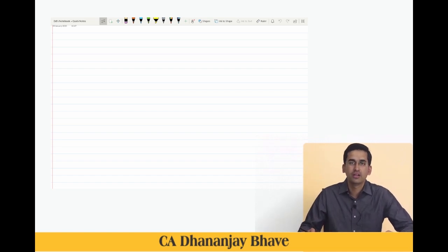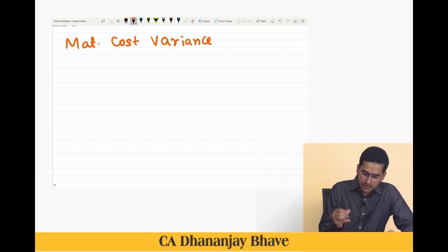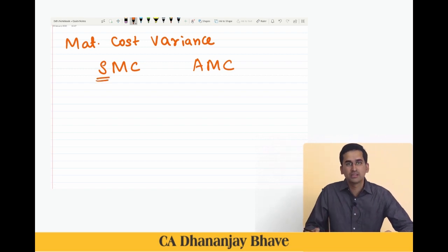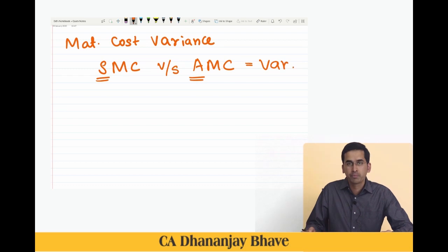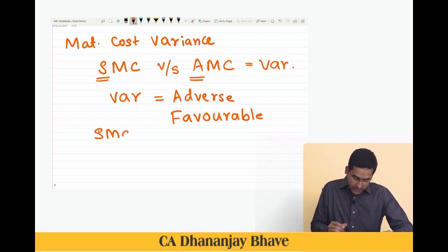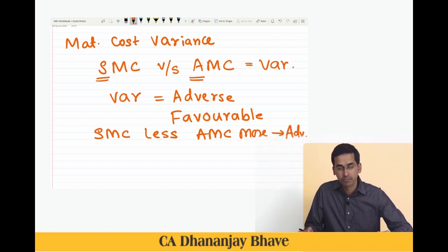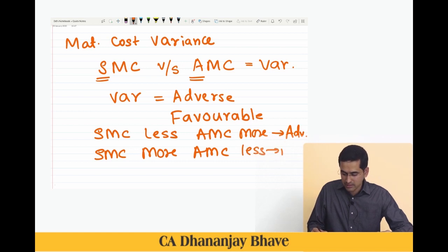Let's start the discussion on material cost variance. Material cost variance is the difference between standard material cost and actual material cost. Standard material cost is the cost that was supposed to be incurred and actual material cost is the cost we have actually incurred. The difference between standard and actual is called variance. A variance can be either adverse or favorable to the organization.